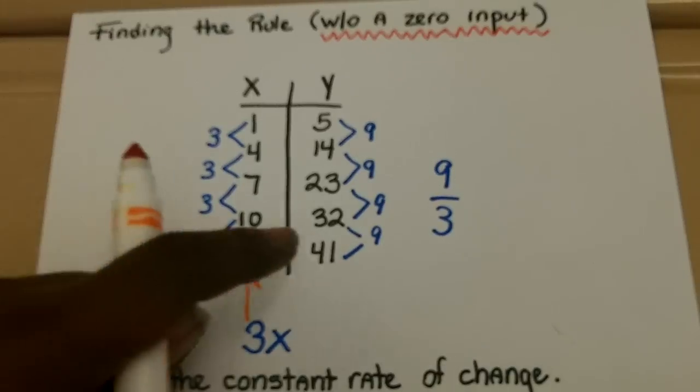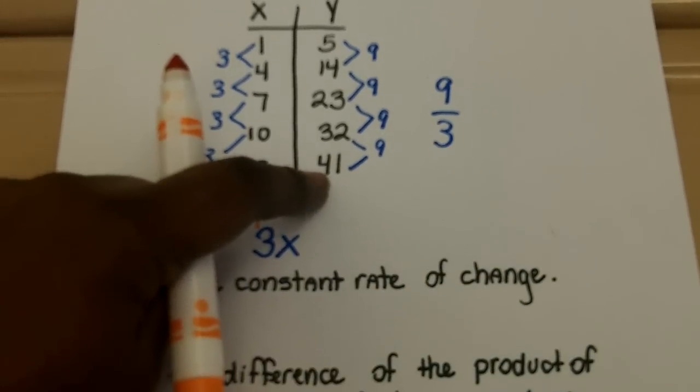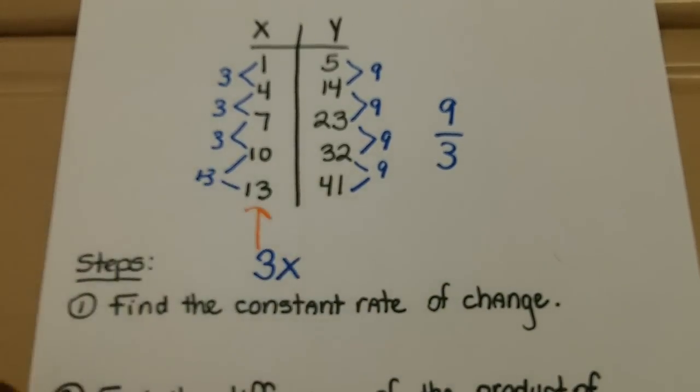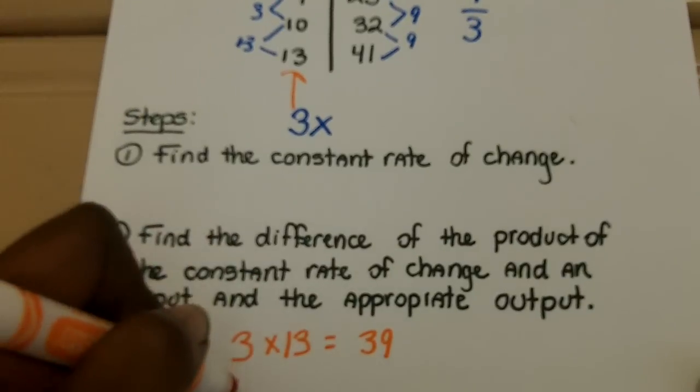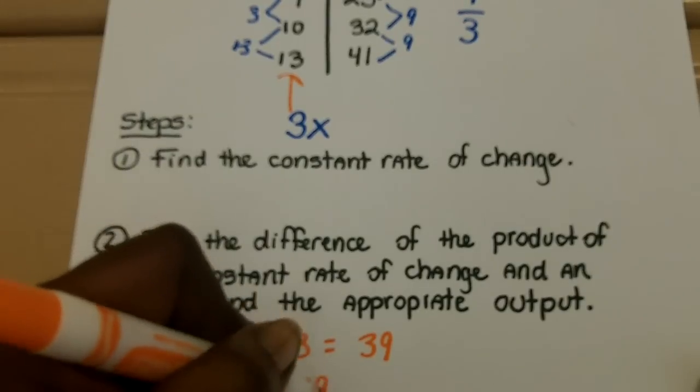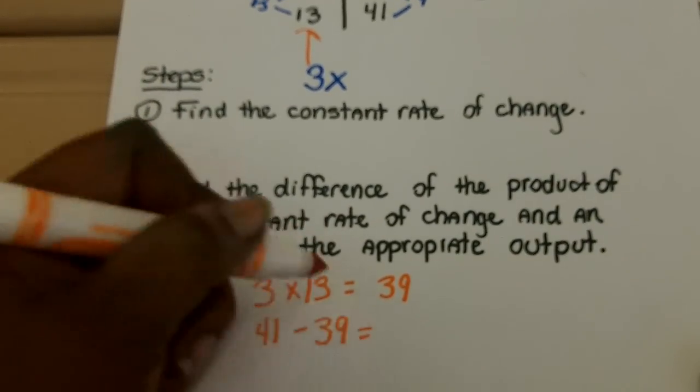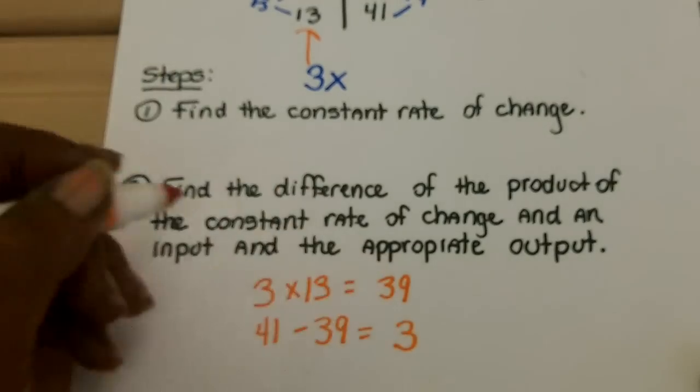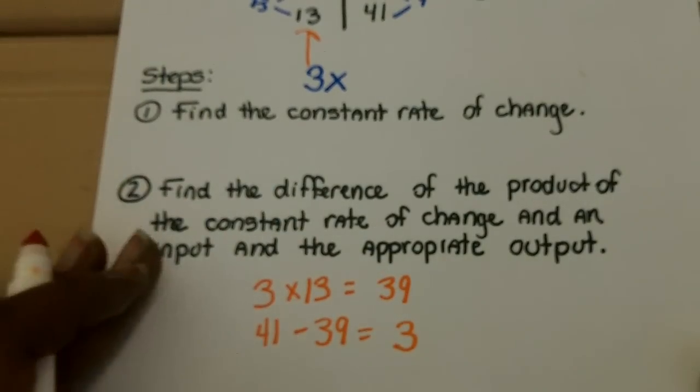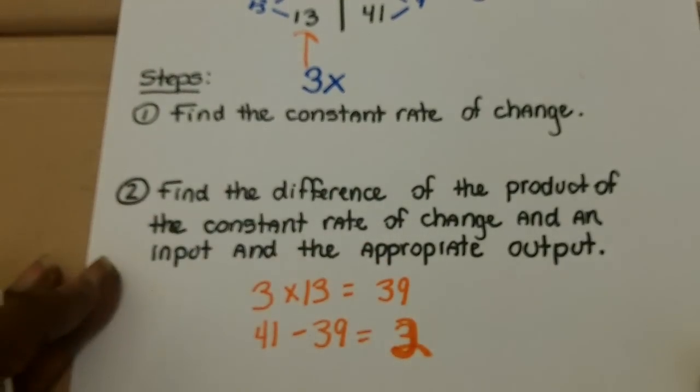However, the output must be 41. So, we need to find the difference between what the output was supposed to be, 41, and what the product was, which was 39. 41 minus the 39 is 3. I'm sorry. It's not 3, it is 2.